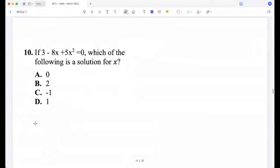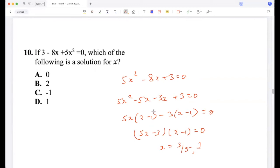If 3 - 8x + 5x² is 0, what is a value for x? So 5x² - 8x + 3 is 0. So 5x² - 5x - 3x + 3 is 0. 5x(x - 1) - 3(x - 1) is 0. So (5x - 3)(x - 1) is 0. So x is 3/5 or 1. So D.